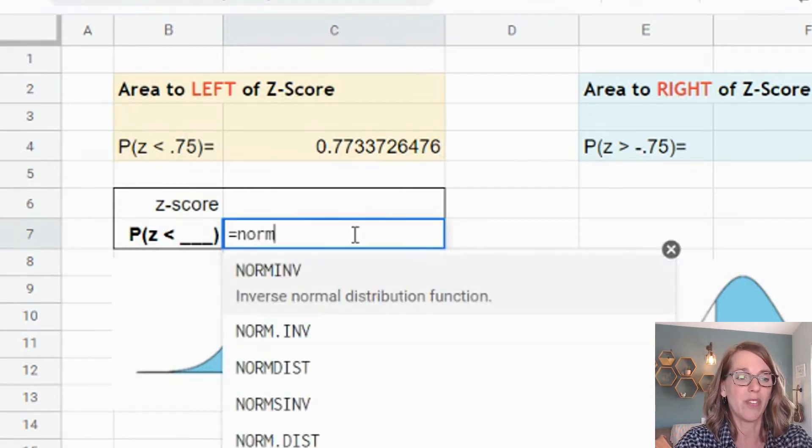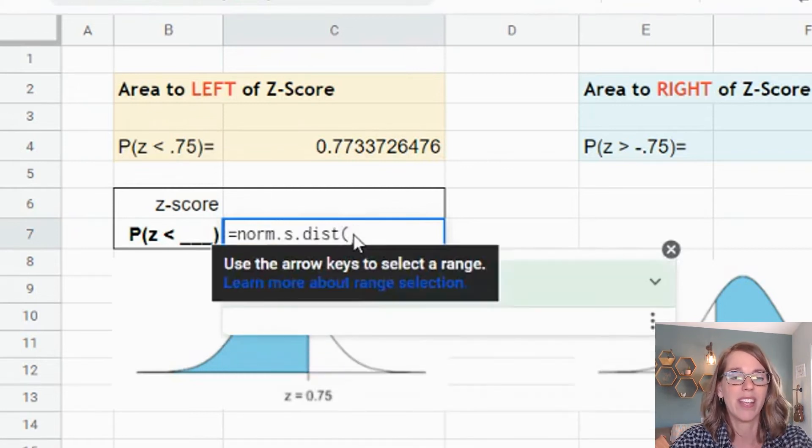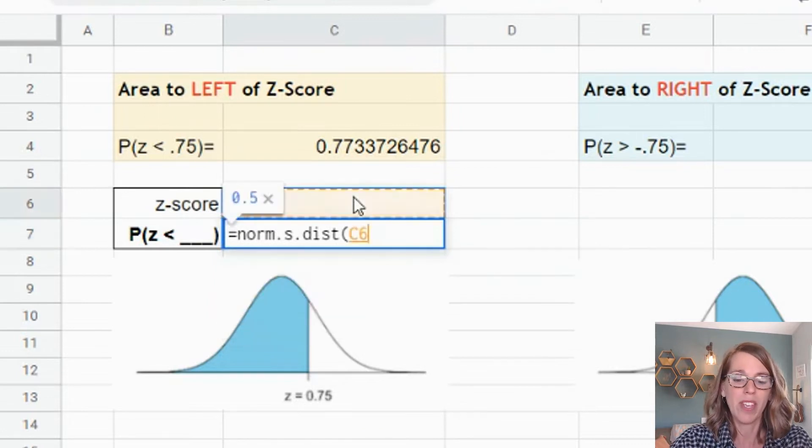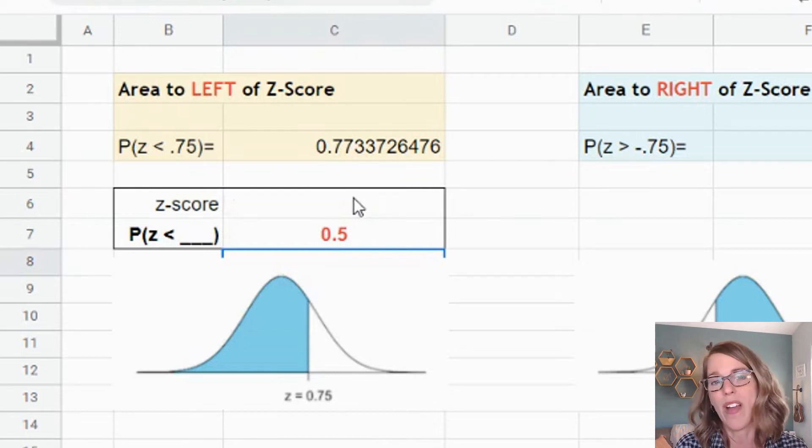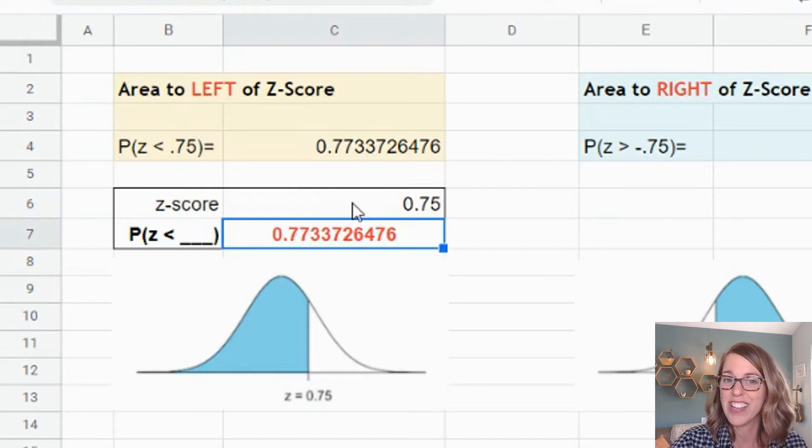So do equals, and then that same NORM.S.DIST parenthesis. I'm going to click on the cell above, then close that with a parenthesis and enter. Notice it gave me 0.5 - that's half the area under the normal curve. It's assuming I've got a 0 z-score. Let's put in another z-score like that 0.75 we just did. If I hit enter, it calculates that as well. A really nice way to make this a plug-and-play spreadsheet.